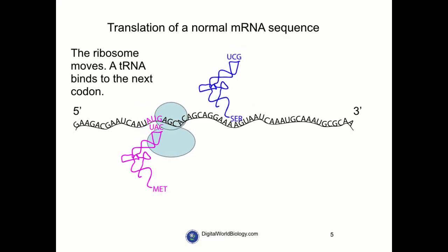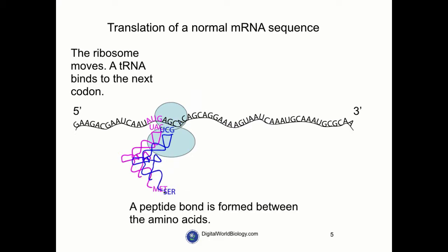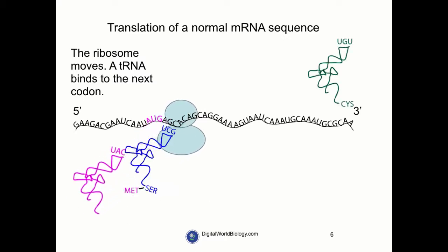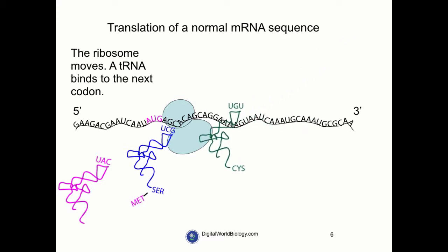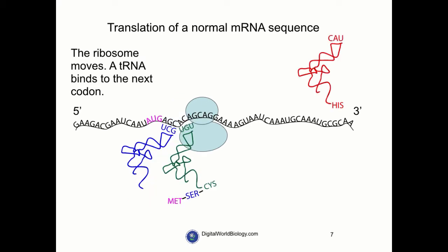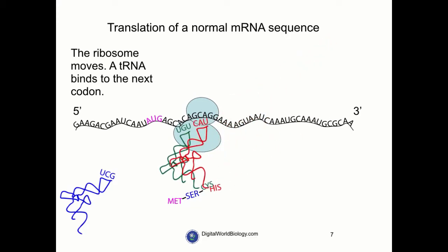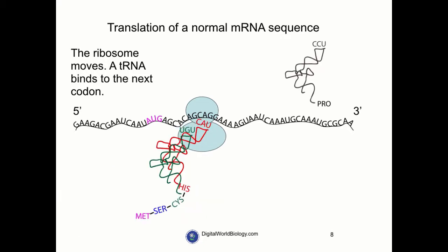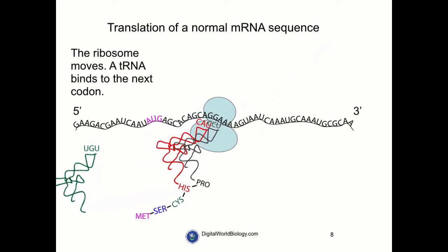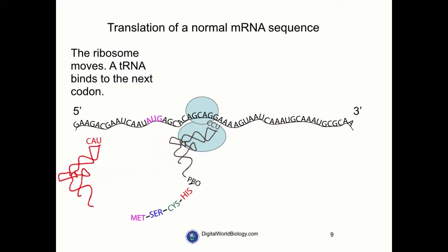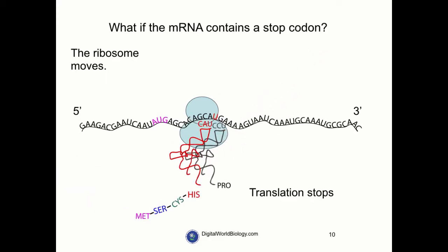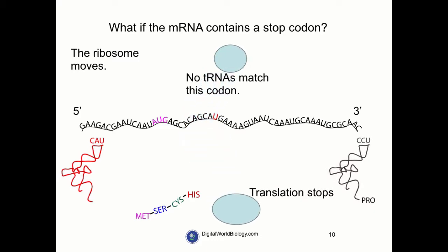The ribosome then shifts position a little and another tRNA is able to bind to its complementary codon. The ribosome, which is not drawn to scale, catalyzes the formation of a peptide bond. This process continues as additional tRNAs bring their amino acids to be added to the chain. But what happens when the ribosome encounters a stop codon? In this case, there are no complementary tRNAs to bind to the messenger RNA. So the ribosomes dissociate and translation stops.